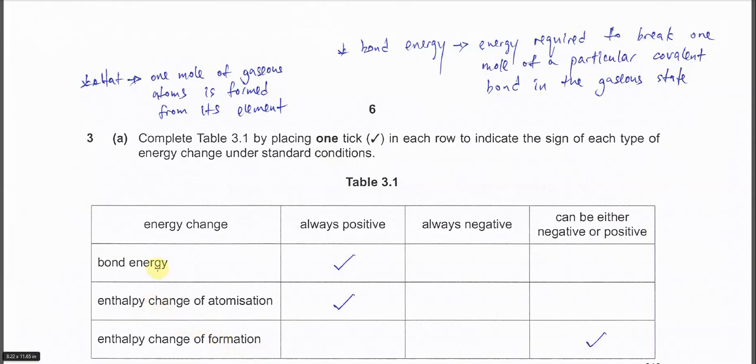For these three enthalpies, first you need to know at least the definition. The bond energy is the energies required to break one mole of a particular covalent bond in gaseous state. So from this definition we know that energy must absorb, means it must be always endo, so it's positive. Bond energy must be positive.